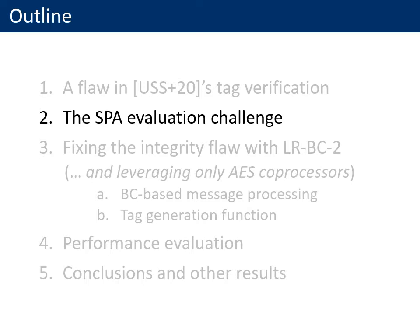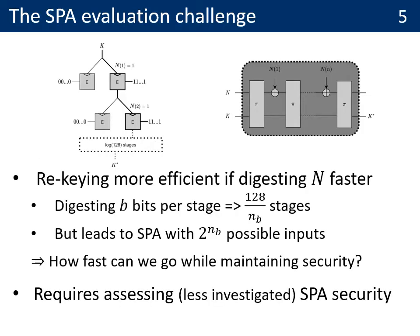Before moving to the solution, I would like to come back to the main assumption of this paper: that we can have SPA security for the leakage-resilient PRF. An example of the leakage-resilient PRF starts from the master key K, and at every stage of the PRF, we encrypt a 0 or 1 plaintext depending on the value of the nonce. After 128 stages, we obtain a fresh key K*. The same kind of construction can be based on a sponge. This re-keying can become more efficient if we are able to digest the nonce faster.